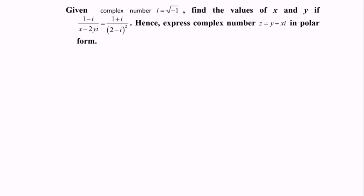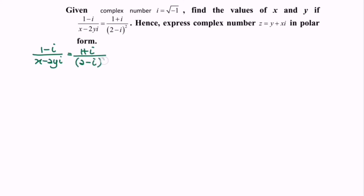Find the value of x and y if the equation given is 1 minus i over x minus 2yi, equals to 1 plus i over 2 minus x, bracket squared. Hence, express the complex number z equals to y plus xi in the polar form.